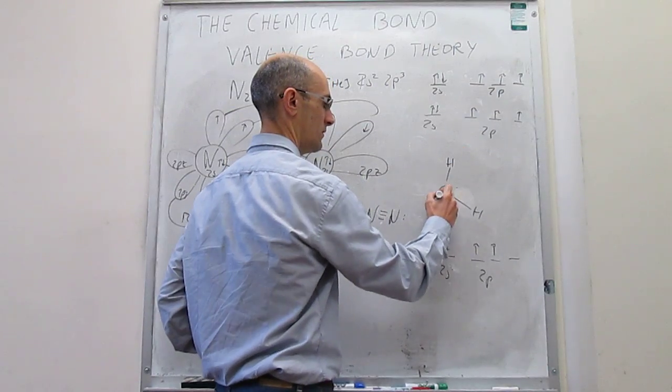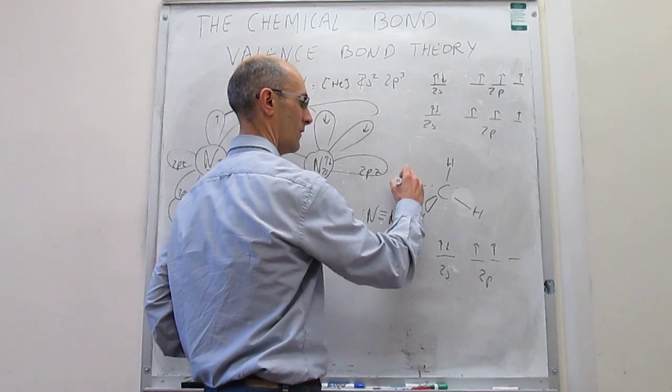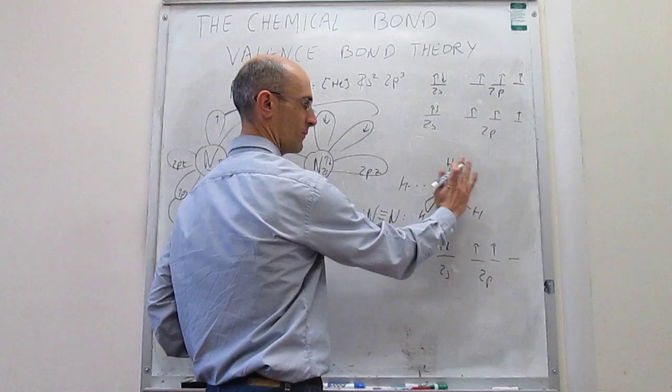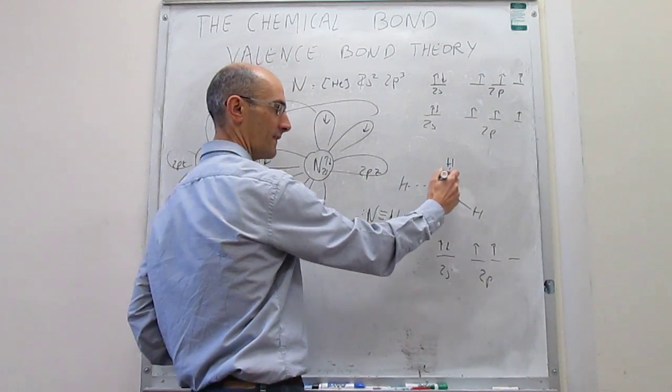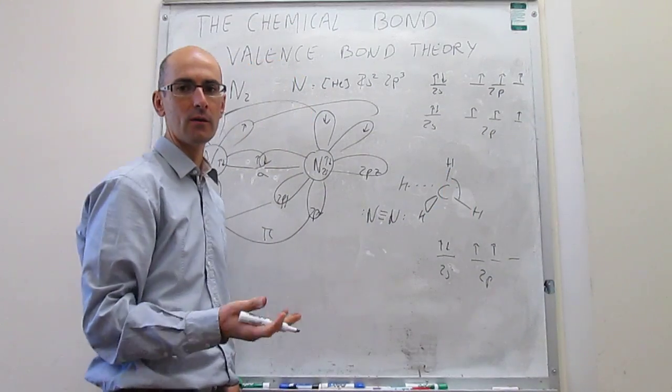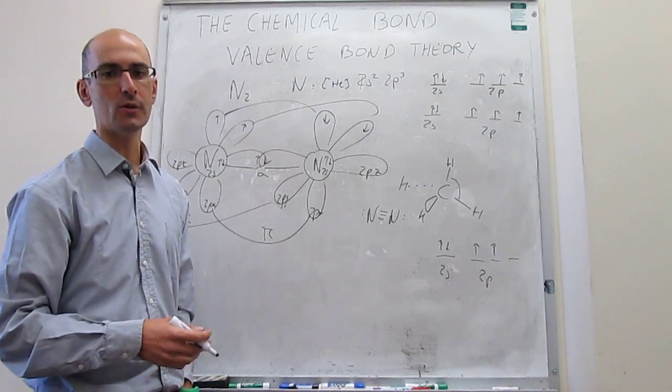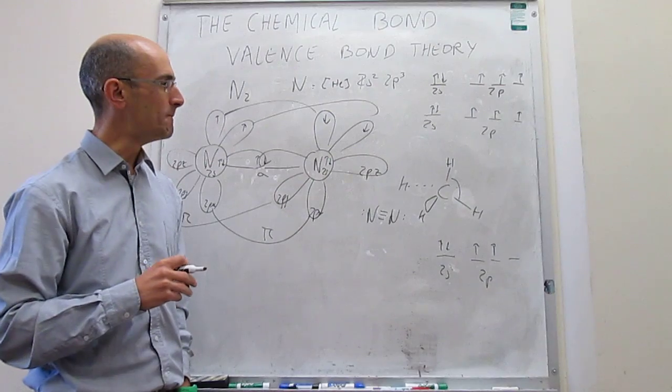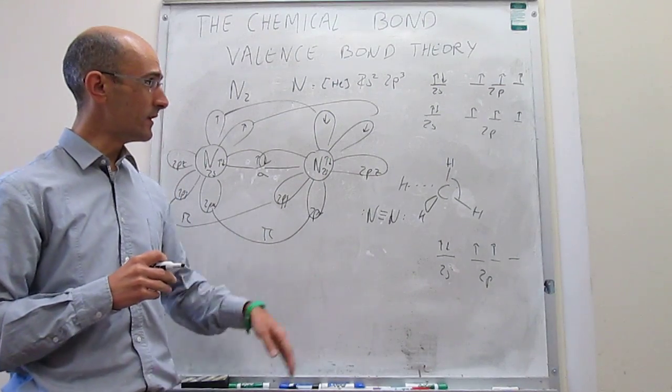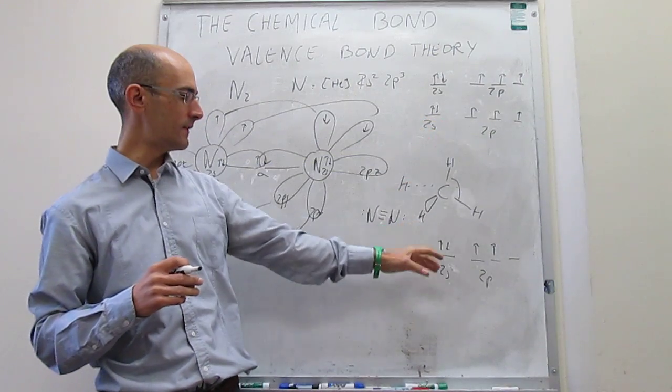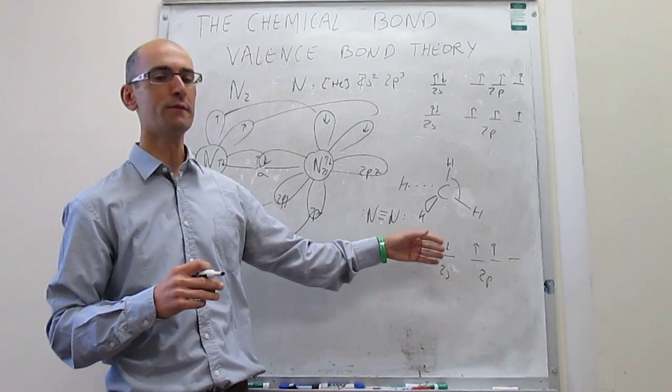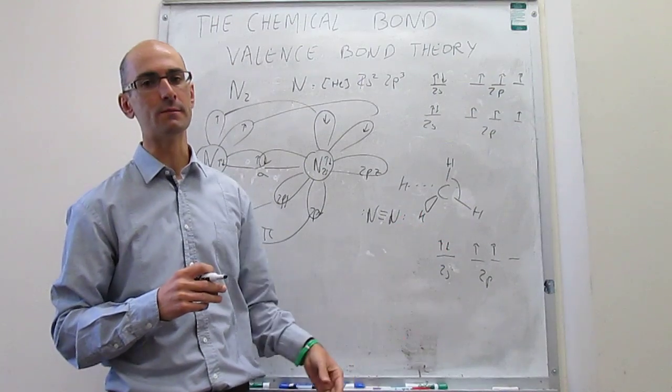That is tetrahedral, where these two bonds will be in the plane of the whiteboard, this one will be coming out, this one will be going in, and the angle is approximately about 109 degrees or so. So in terms of that, the normal atomic orbital description of this series of molecules actually fails to capture something as simple as methane.